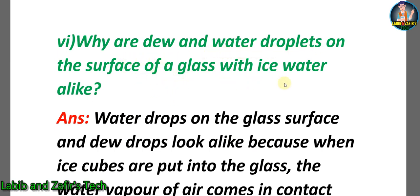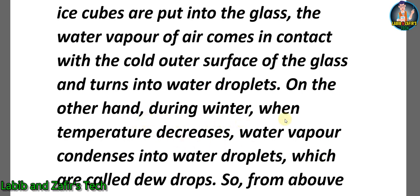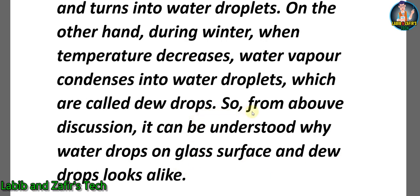Next question: Why are dew and water droplets on the surface of a glass with ice water alike? Answer: When ice cubes are put into a glass, the water vapor of air comes in contact with the cold surface of the glass and turns into water droplets. On the other hand, during winter when temperature decreases, water vapor condenses into water droplets called dew drops. This explains why water drops on a glass surface and dew drops look alike.